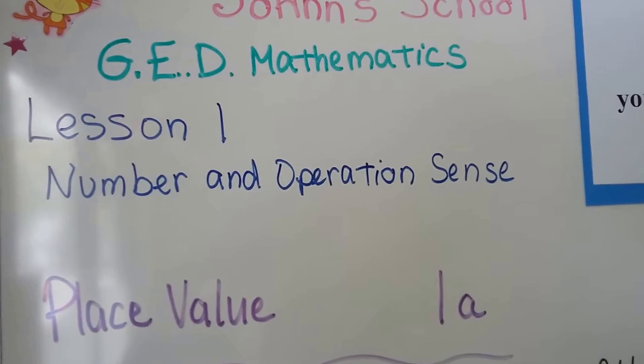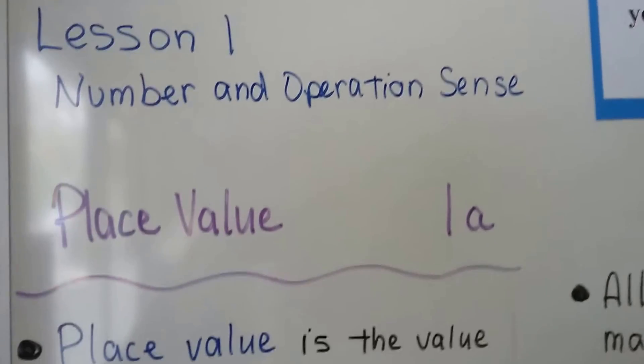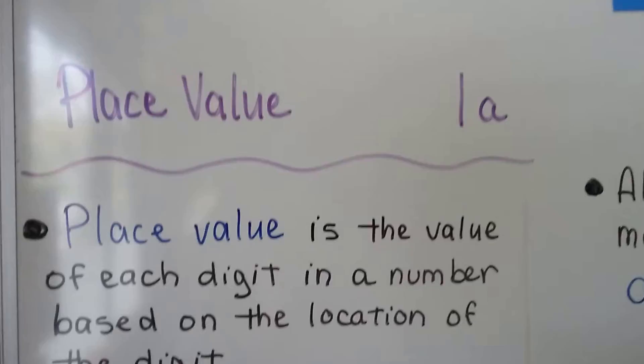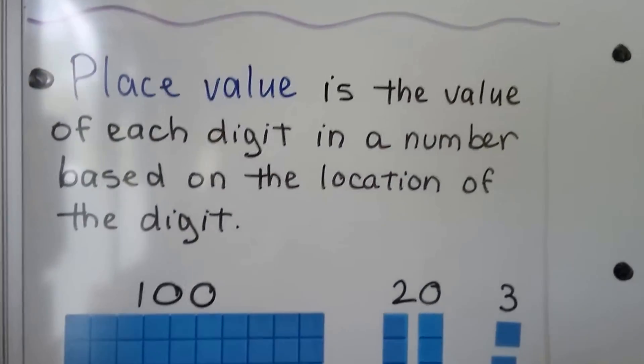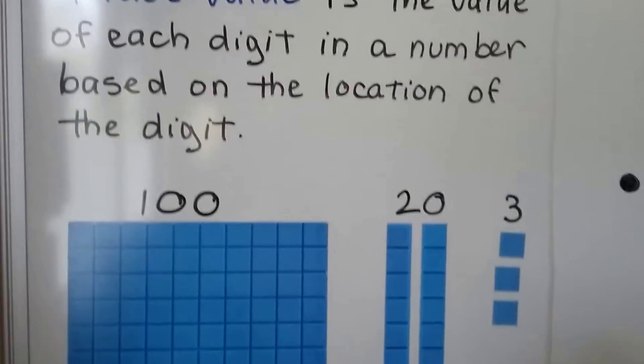Place value 1a. Place value is the value of each digit in a number based on the location of the digit.